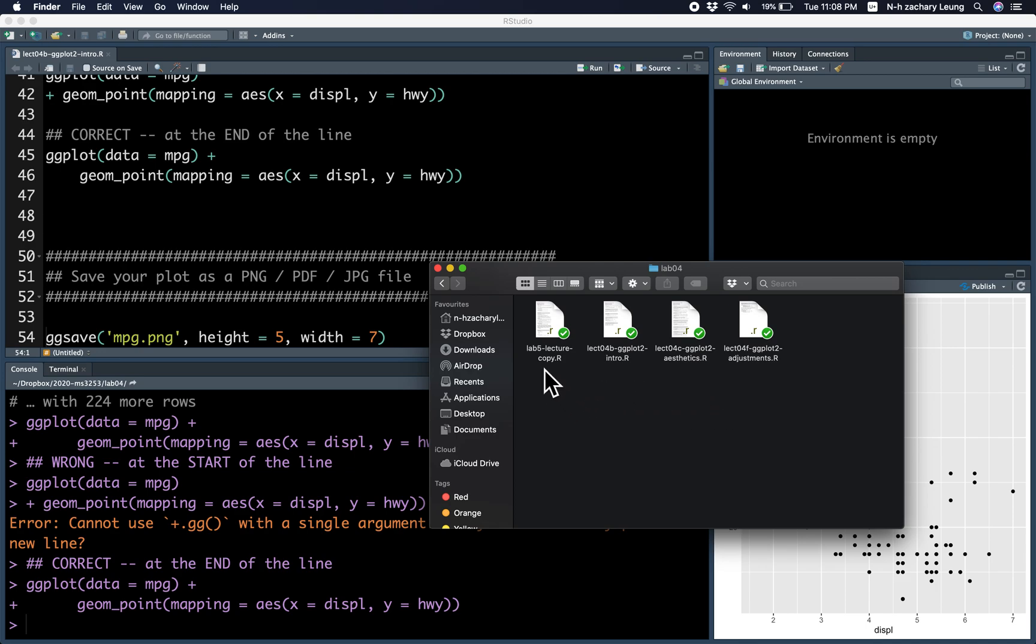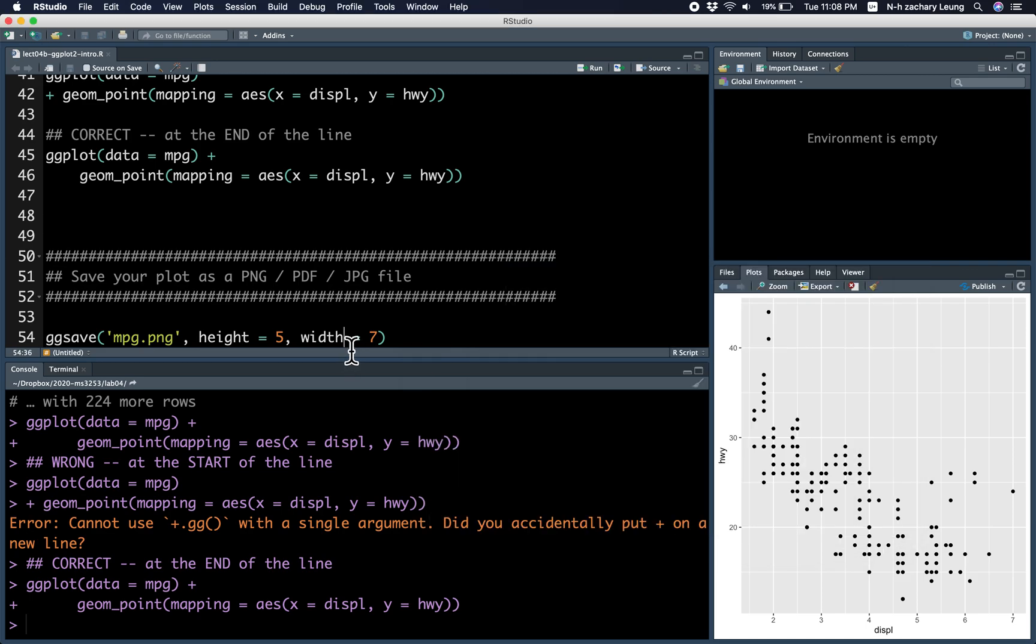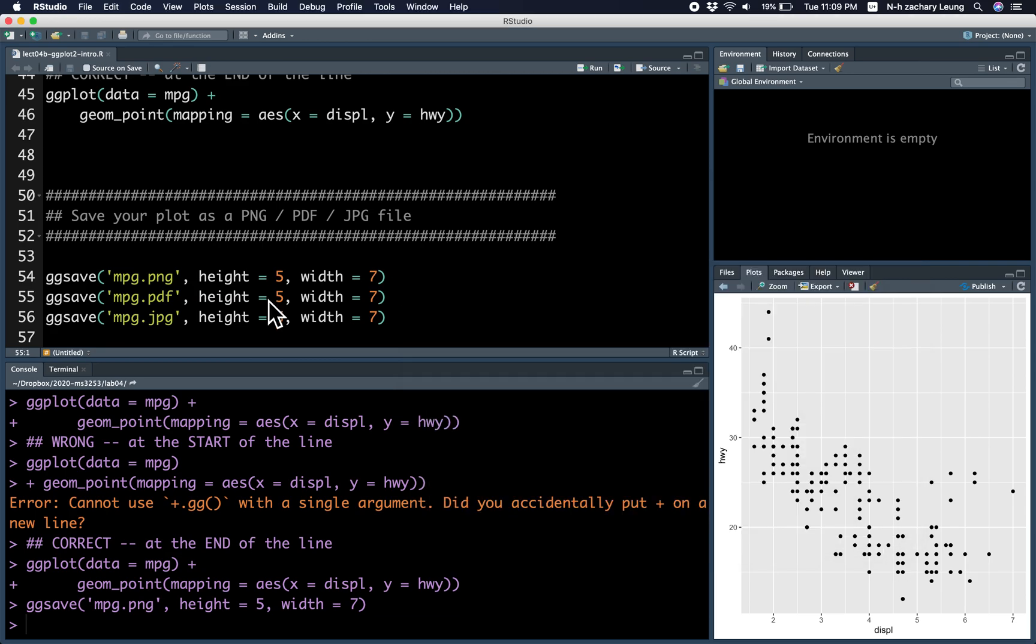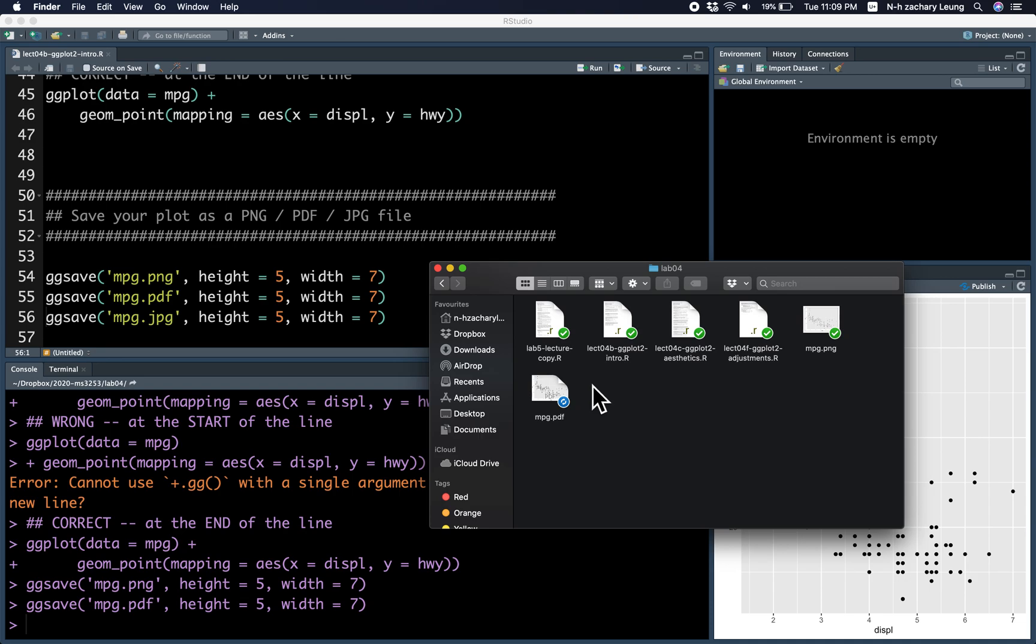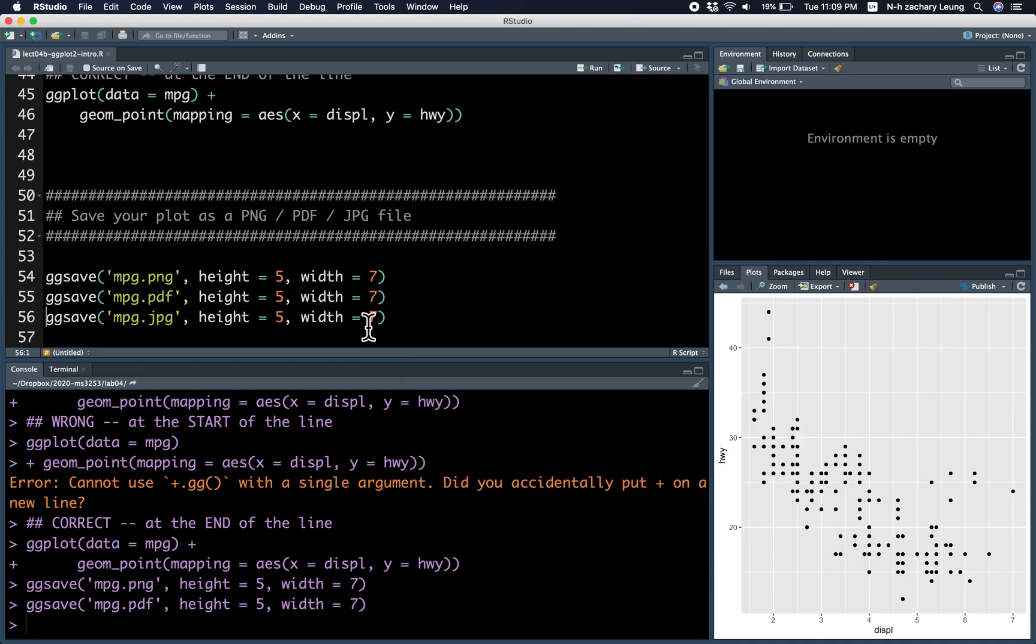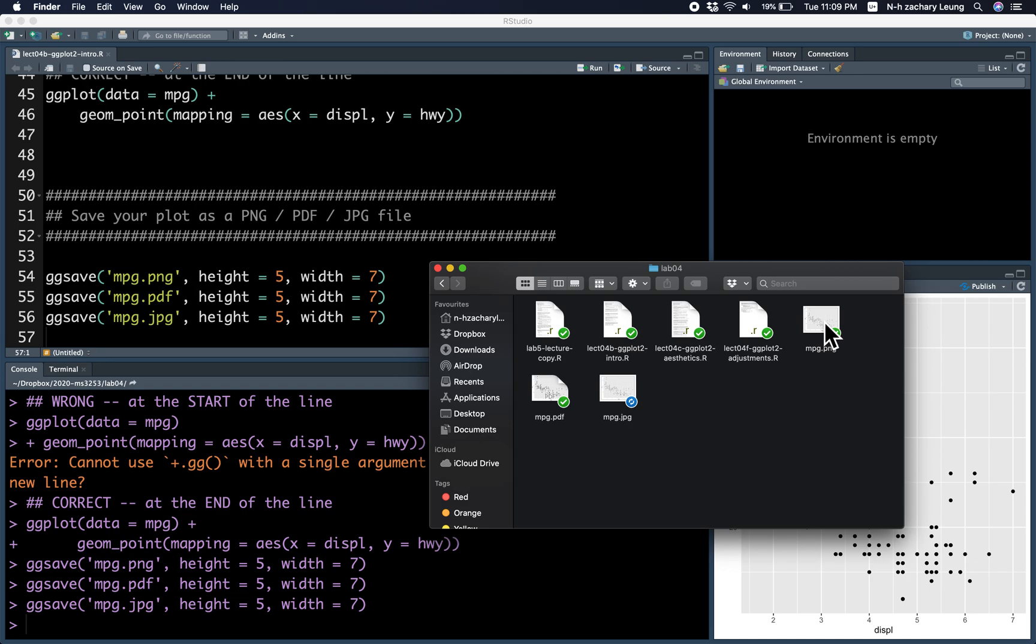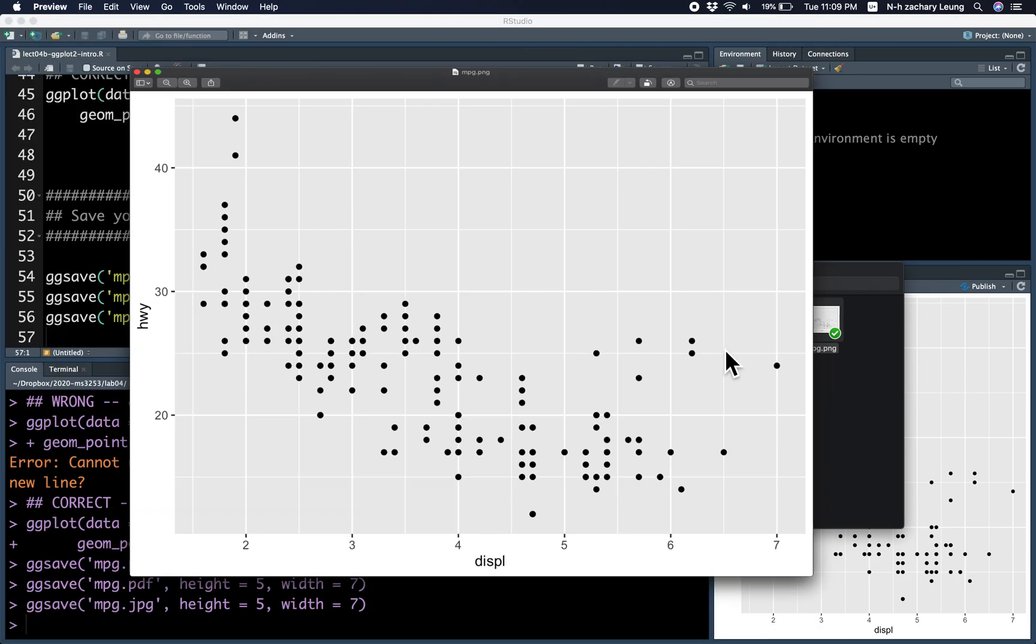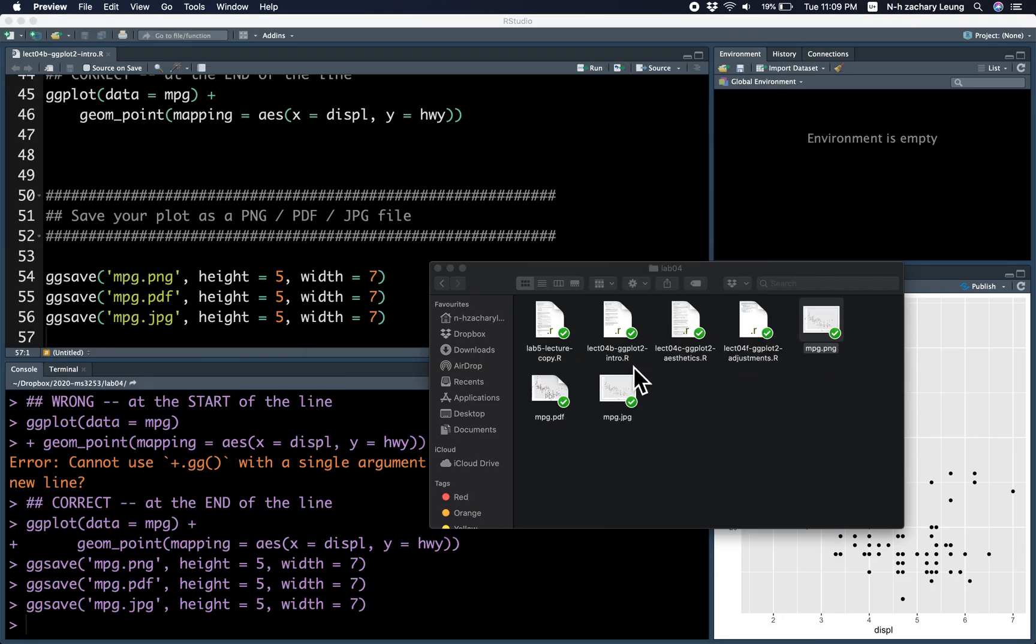Notice that there's four R files, but no PNG PDF or JPEG files. If I run this, then the PNG file has just appeared. If I run this, then a PDF file appears. If I run this, the JPEG file appears. And I'll just open one of them to show you that it's basically the same. And you should just trust me because I'm so trustworthy that the other files are also correct.